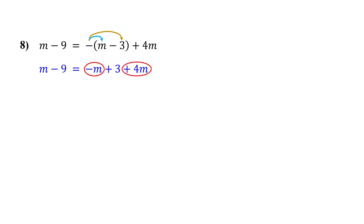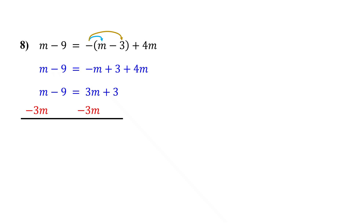Next, combine the like terms on the right side. Negative m plus 4m gives us 3m. This is now an equation with variables on both sides, just like the ones we solved in examples 4 and 5. So next, collect the variables on one side. Let's collect them on the left by subtracting 3m from both sides. On the left, m minus 3m gives us negative 2m. On the right, these cancel out, leaving just 3.